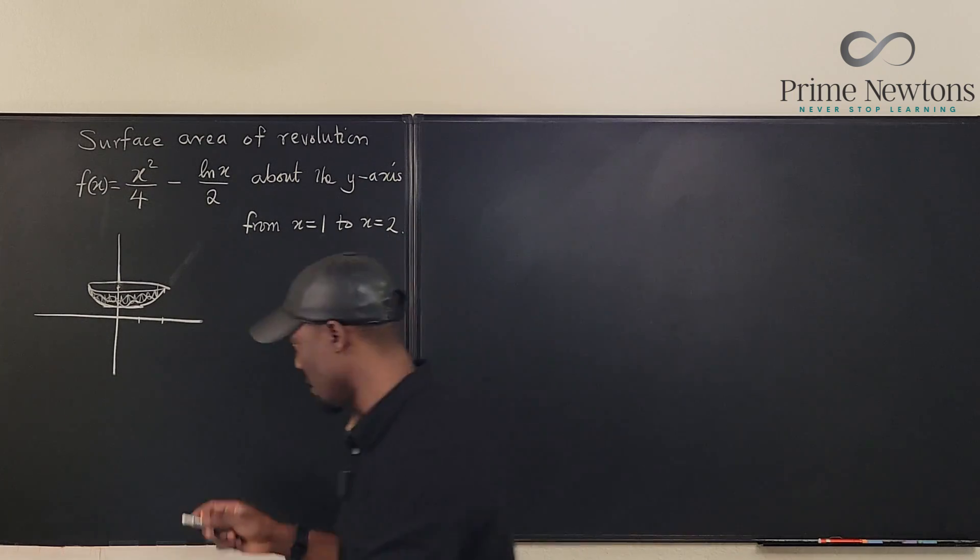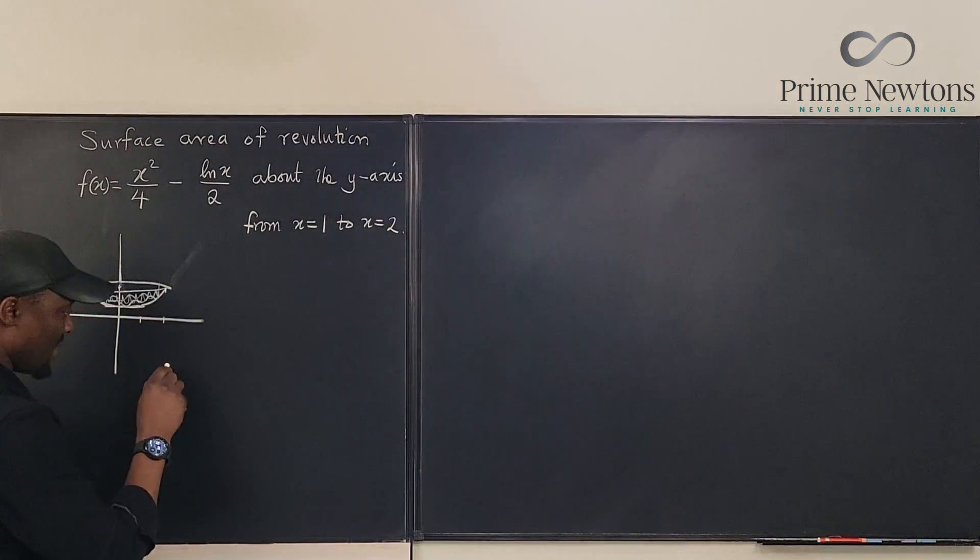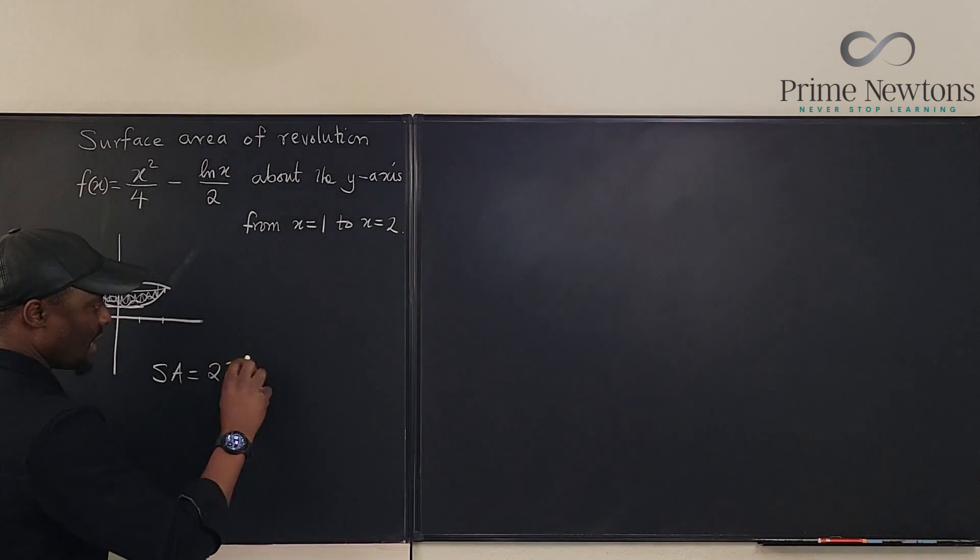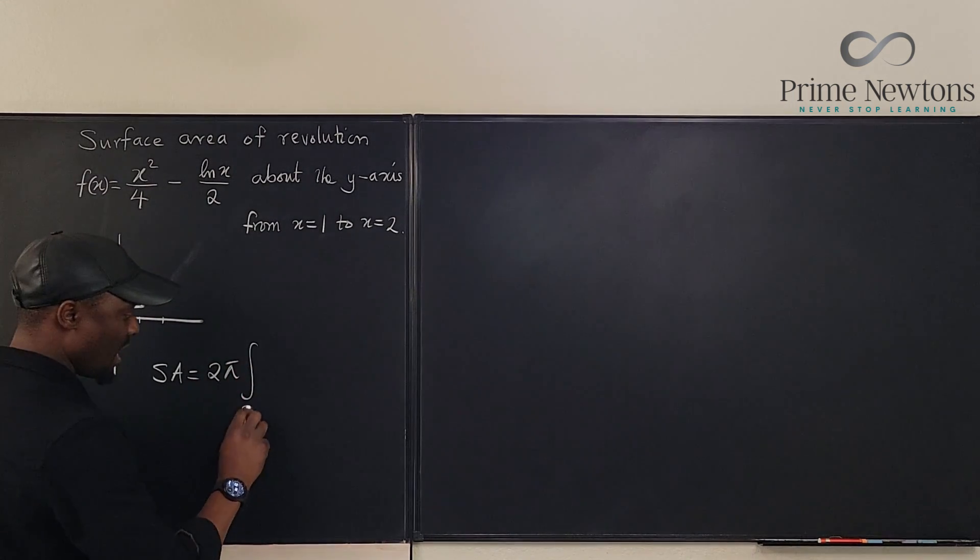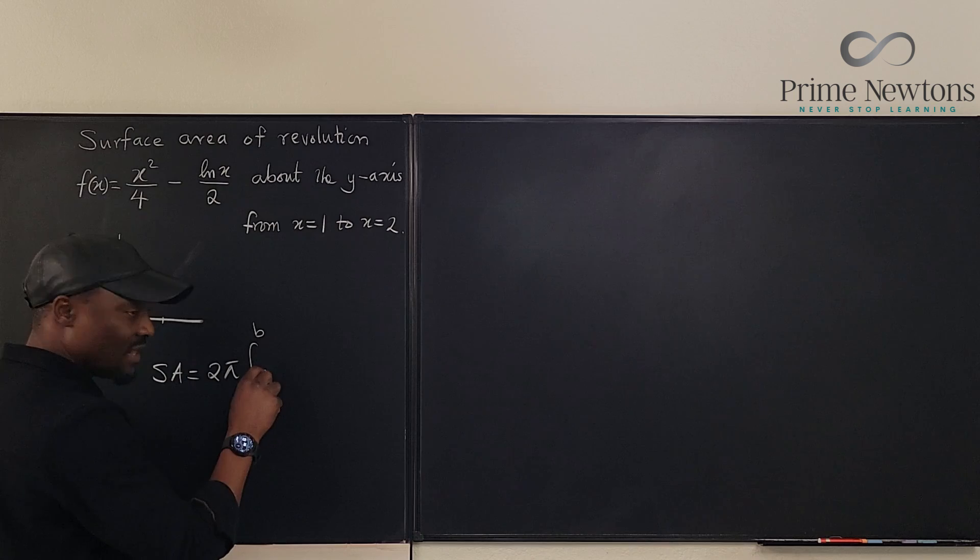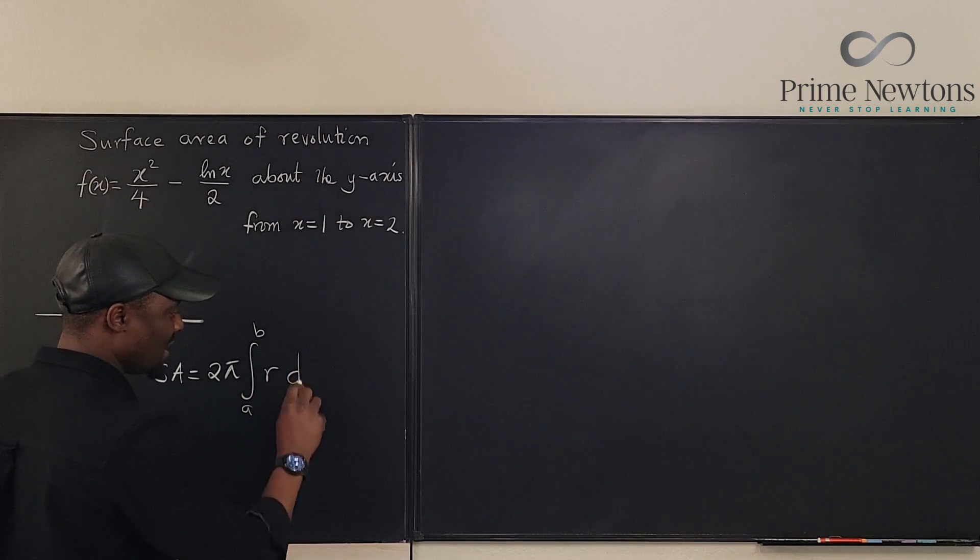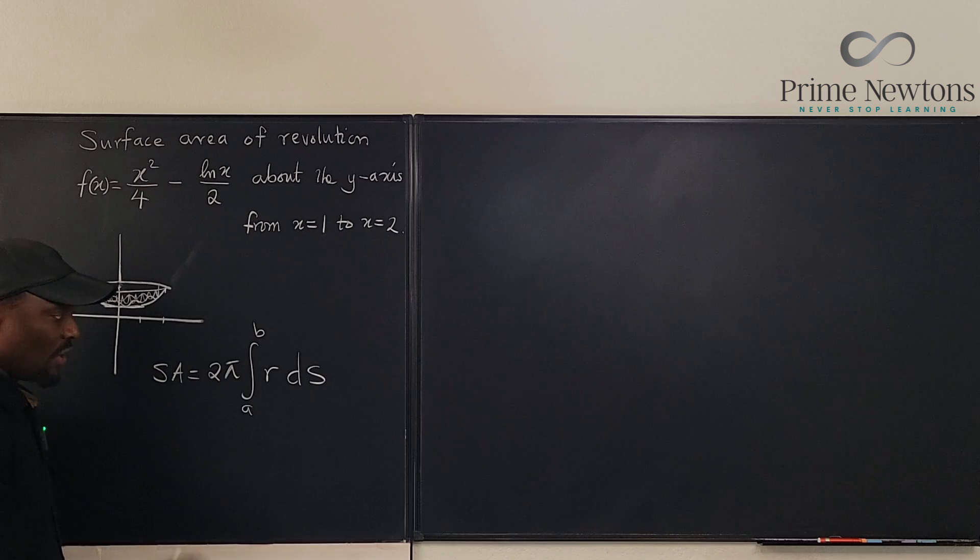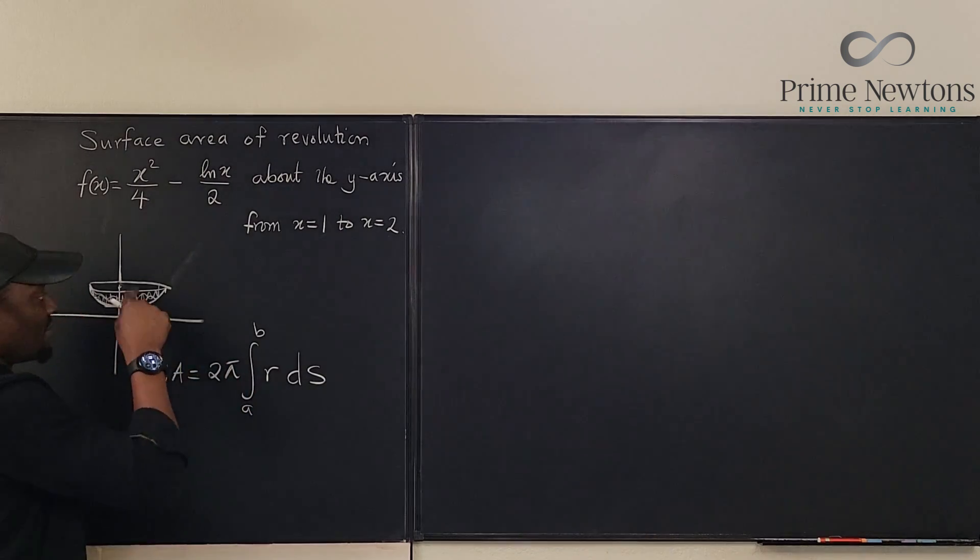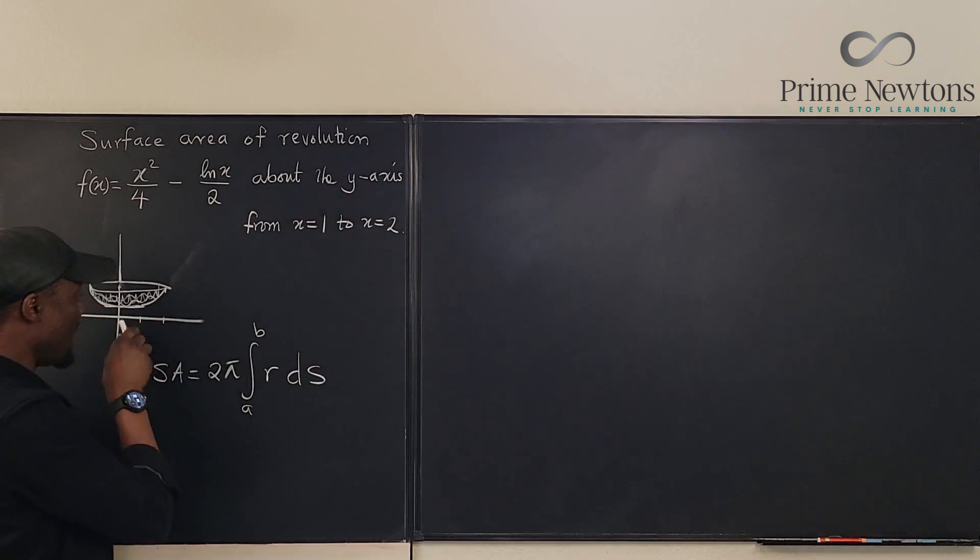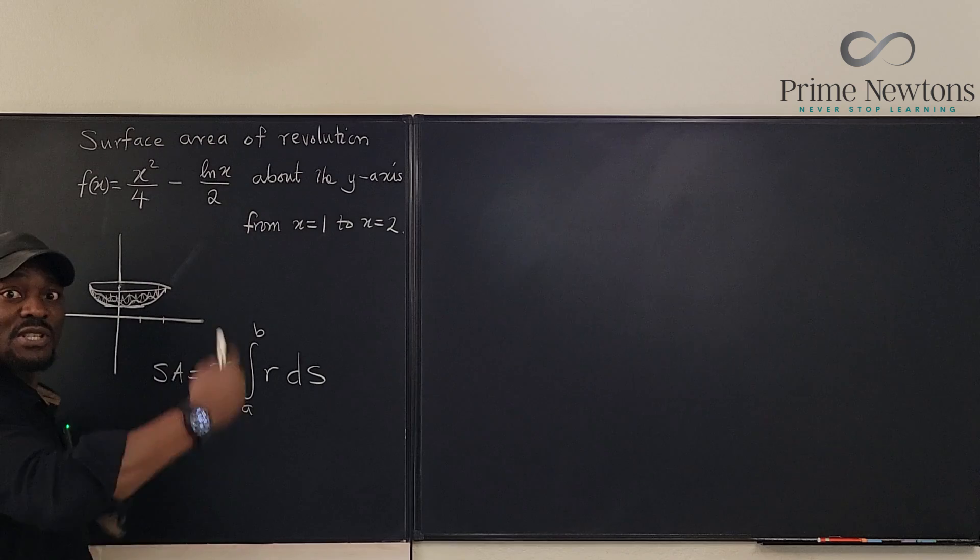So when you write your formula, this is our formula. We say that the surface area is always equal to 2 pi times the integral from a to b of the radius multiplied by ds. What's my radius now? It's x because I rotated about the y-axis. So this has got to be my radius. It has to be in terms of x. That's how I measure the radius, not vertically.